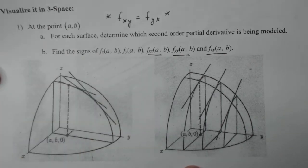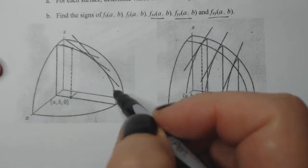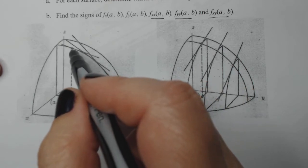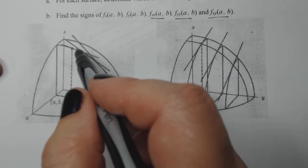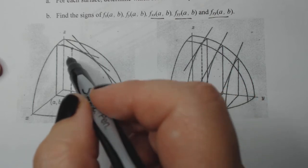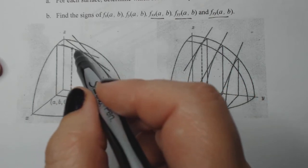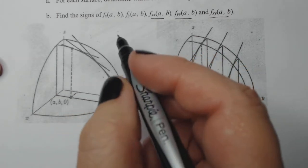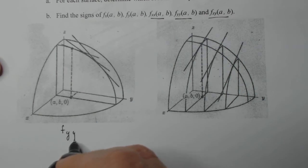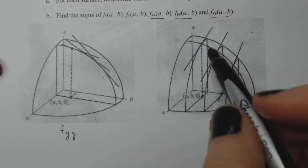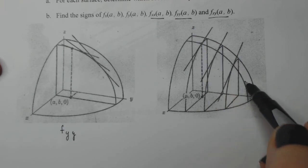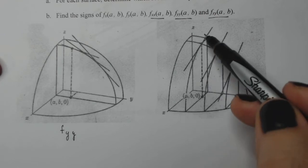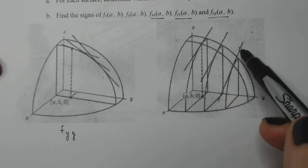Looking at the first picture, here's the point in question. It looks like I'm moving parallel to the y-axis and the slopes of these lines are also parallel to the y-axis. So this is referencing a change in y and the change in the change in y — so this is f_yy. The second picture: I'm still moving parallel to the y-axis, but these slopes are with respect to the x-axis. So this is f_yx.